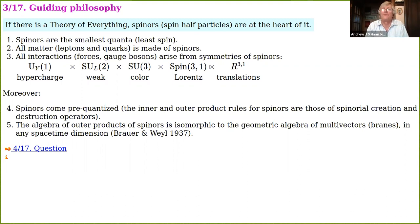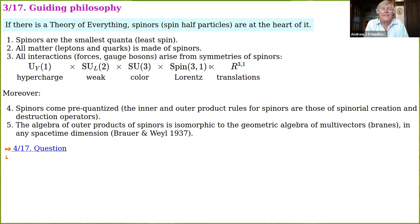The standard model, which includes the three forces — hypercharge, weak, and color — is based on the group U(1) × SU(2) × SU(3): a direct product of a hypercharge group, a weak isospin group, and a color group. General relativity is based on the symmetries of the Poincaré group, which is the semi-direct product of Lorentz transformations and translations in 3+1 dimensions.